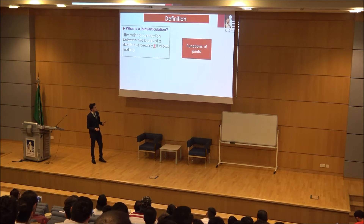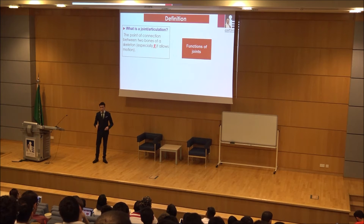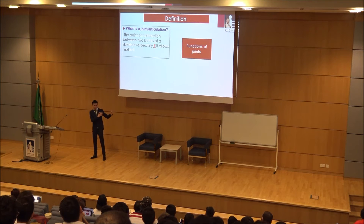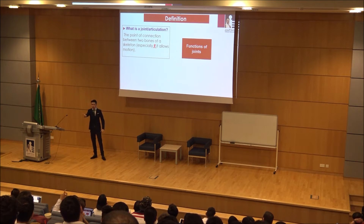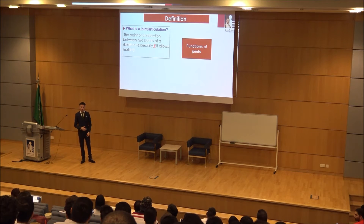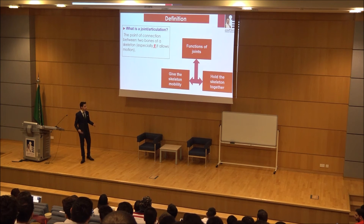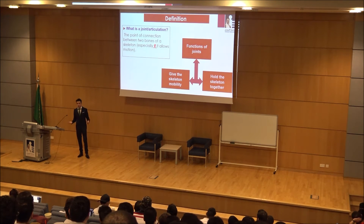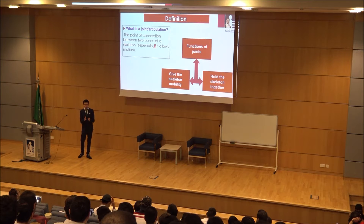Now we're going to talk about the functions of joints — and that's actually a question for you. Just looking at what I'm doing with my elbow, the elbow joint, the shoulder — what's the main function? Movement. So the first function is allowing movement, and the second function is holding the skeleton together.